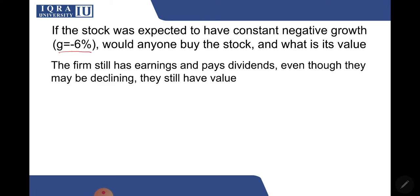The firm still has earnings and pays dividends even though they may be declining, so they still have value. Dividend is still being paid but the dividend is now instead of increasing it is declining every year. So you can still use the constant growth formula because the negative growth rate is constant. So it's going to decline every year at a constant rate. Negative 6% rate constantly reduces your dividend till infinity, so you can still use the same formula.